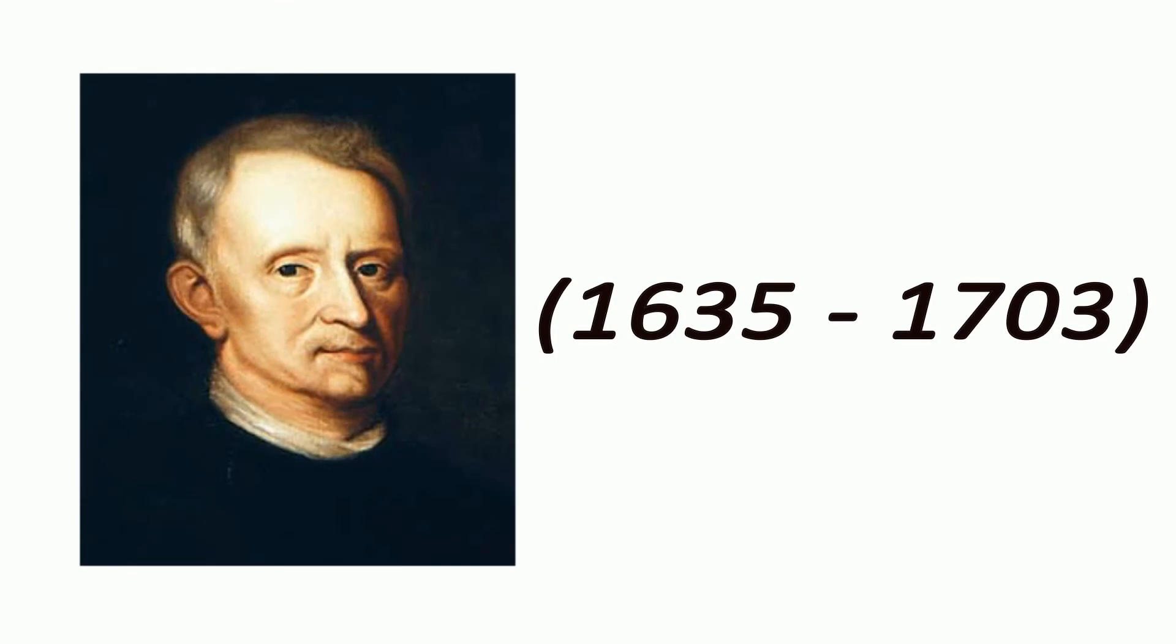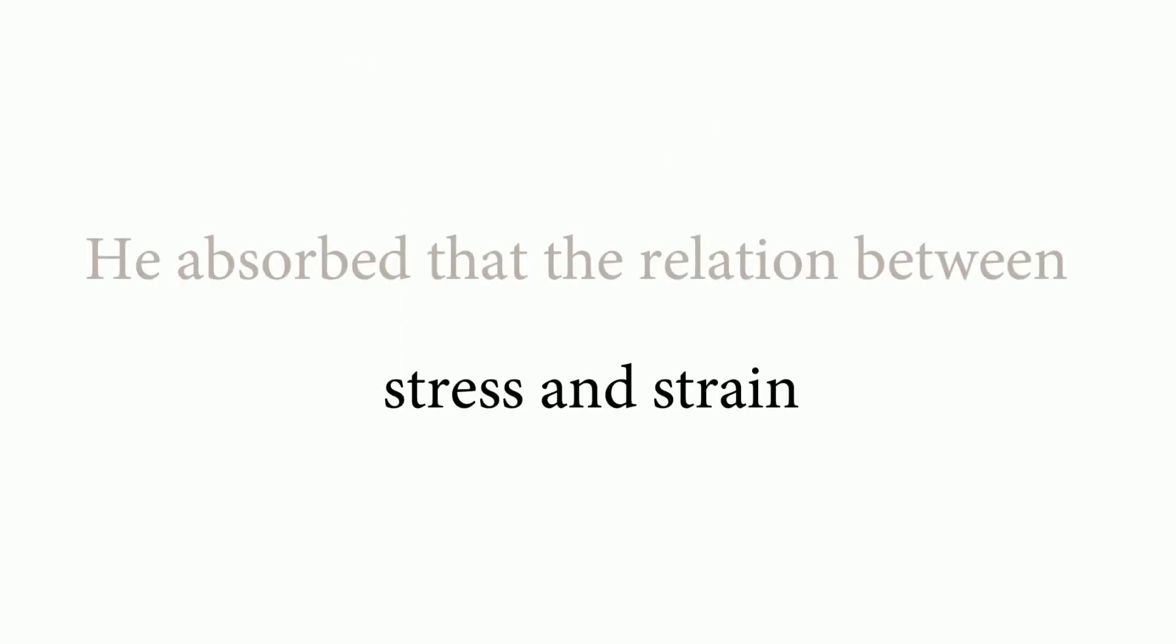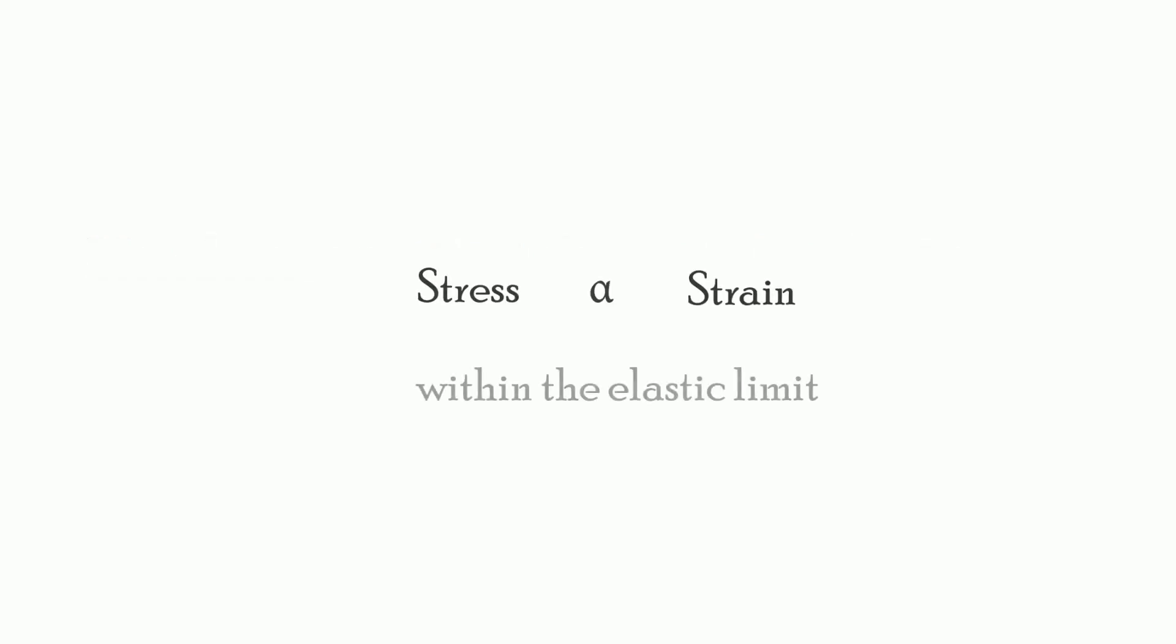Robert Hooke is the scientist who found that stress is directly proportional to strain. For a certain amount of given stress, a corresponding strain will be produced. He observed this proportionality between stress and strain. Hence, stress is directly proportional to strain, and the proportionality constant is the modulus of elasticity.